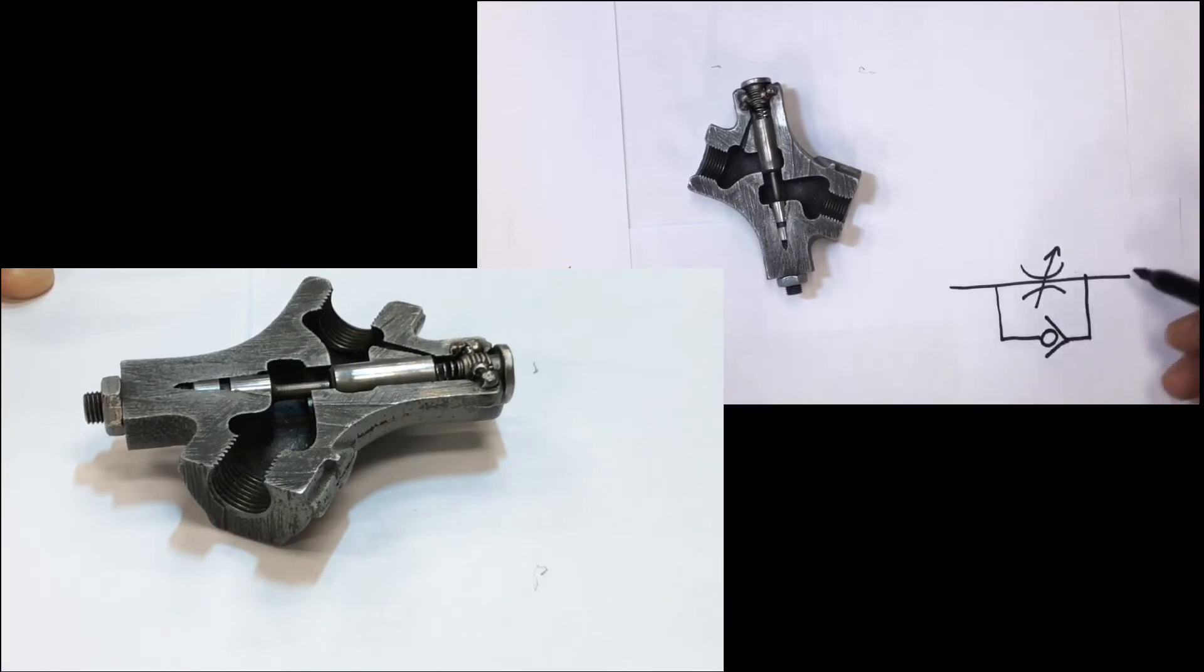Now you can see that when oil is flowing in this direction, it can flow through the orifice and open the check and flow around. So it's free flow in that direction. And then in this direction, when oil is coming back, it's metered flow.